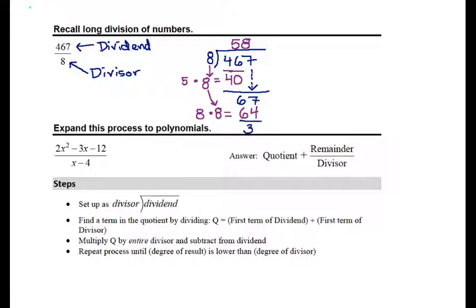When we get to a number that is smaller than the divisor, we know we're done; we call that number the remainder. Up here, we have what we call the quotient, and we would write our answer in the form quotient plus remainder over divisor.